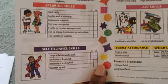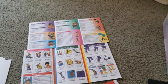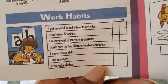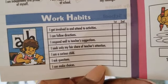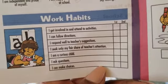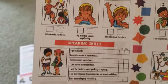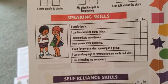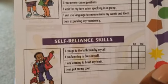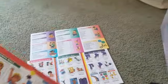For listening, speaking, music skills, and art skills — each developmental milestone may be different depending on what you're working on. Some of the things the two-year-old will be working on: I get involved in and attend to activities, I can follow directions, I respond well to teacher suggestions, I seek only my fair share of teacher's attention, I am a curious child, I ask questions, and I can make choices. For speaking skills: I speak clearly, I combine words to name things, I communicate in sentences. For self-reliance: I can go to the bathroom by myself, I'm learning to dress myself, and I can brush my teeth.